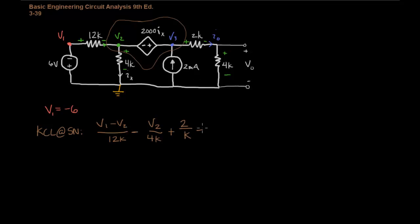And this one's leaving, so we'll put a negative sign in front of it. And remember that we're going to sort of ignore V0 for now. And then we can just have V3 over 2K plus 4K. We'll combine those resistors. And so that will be 6K, and that equals 0.